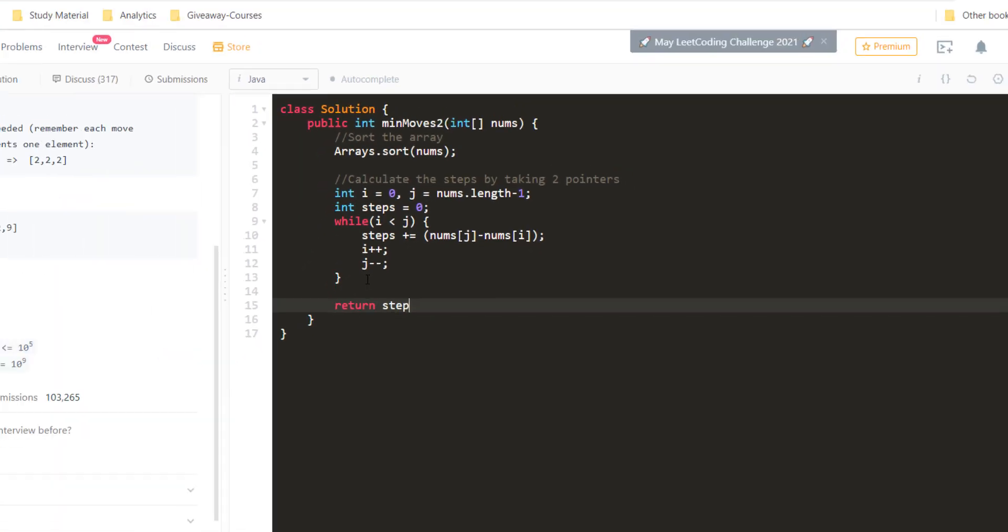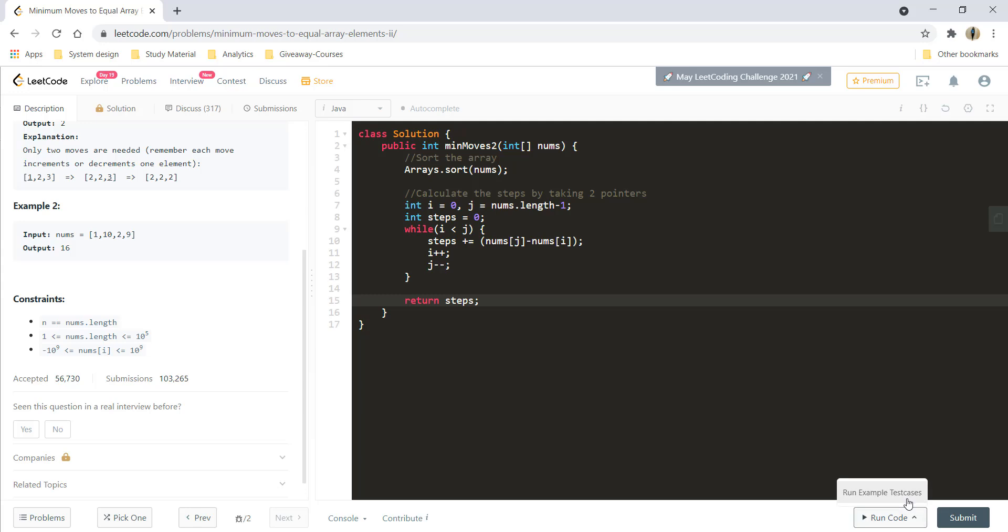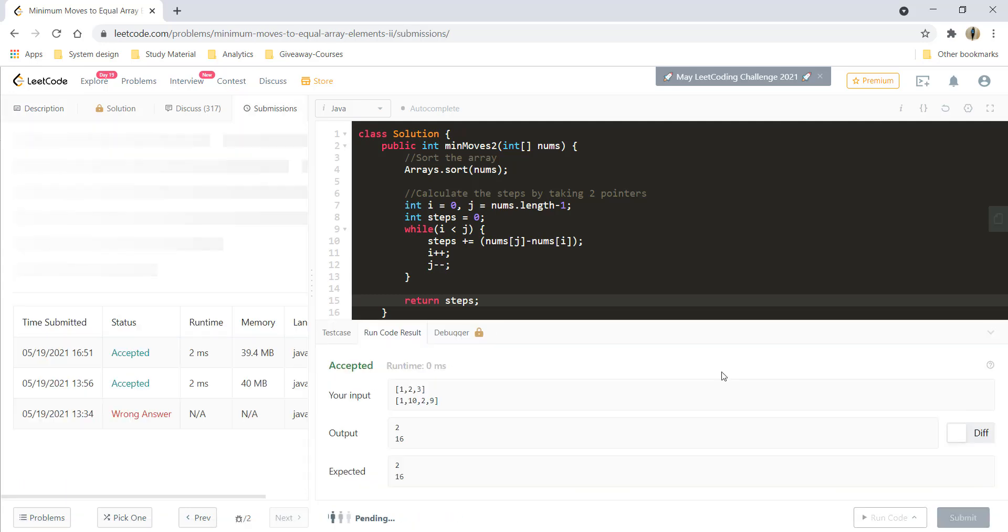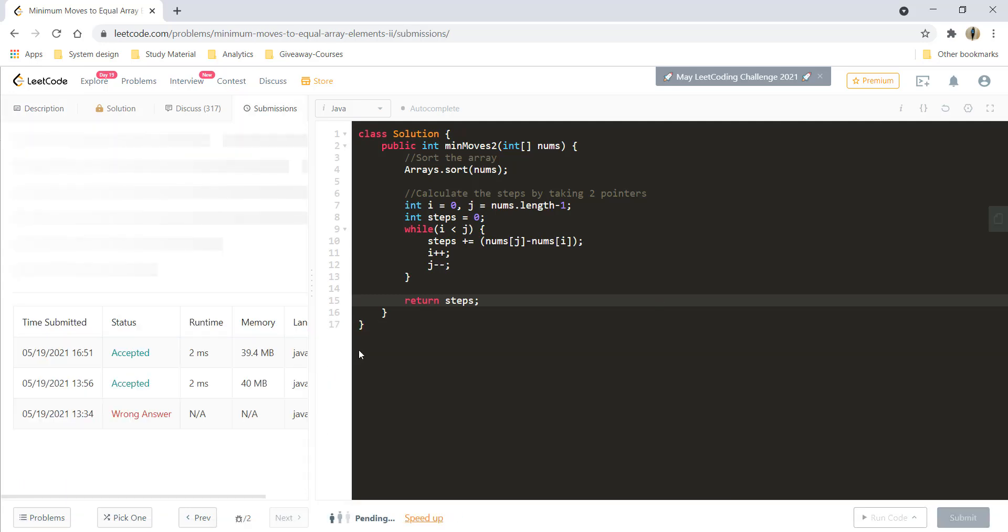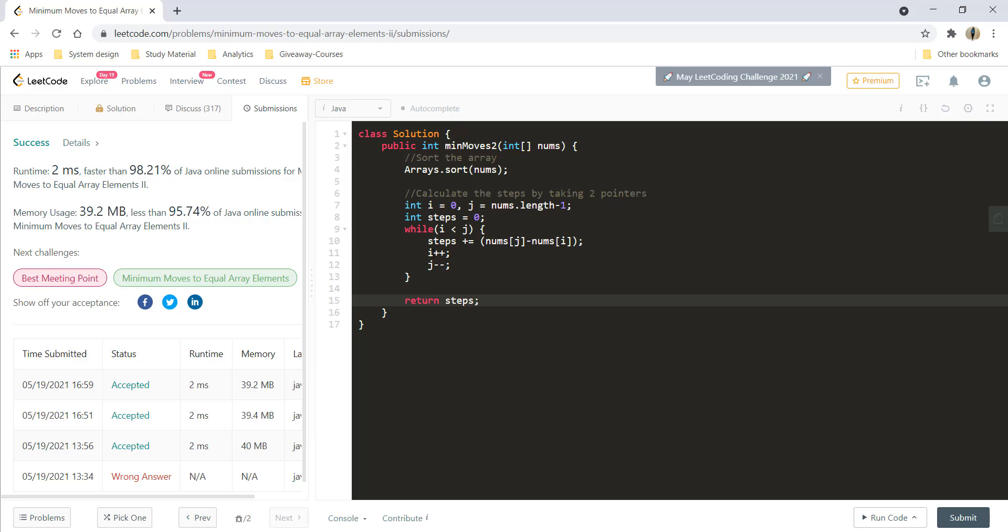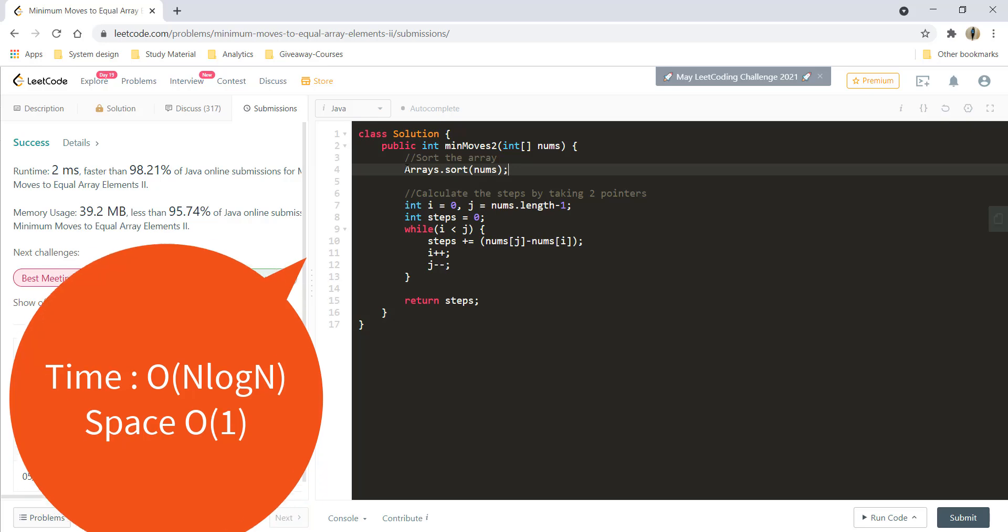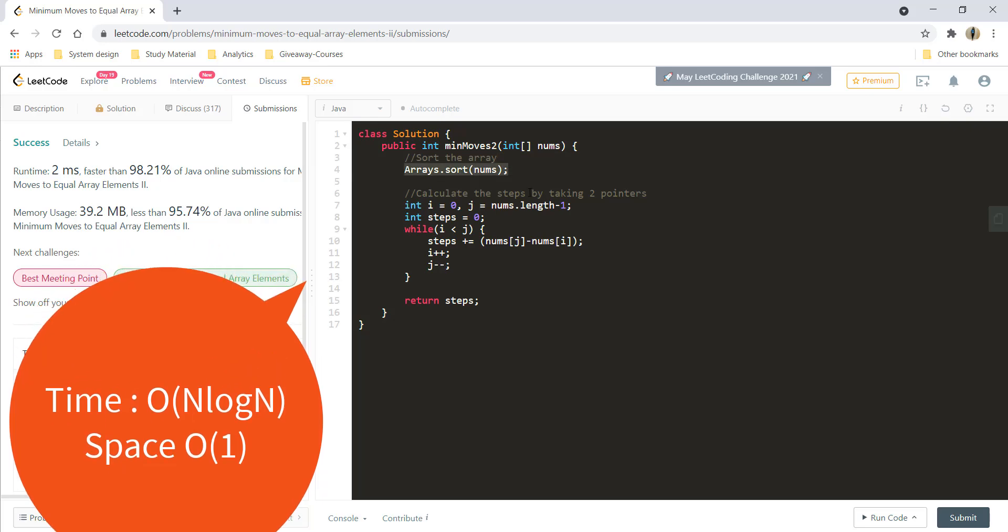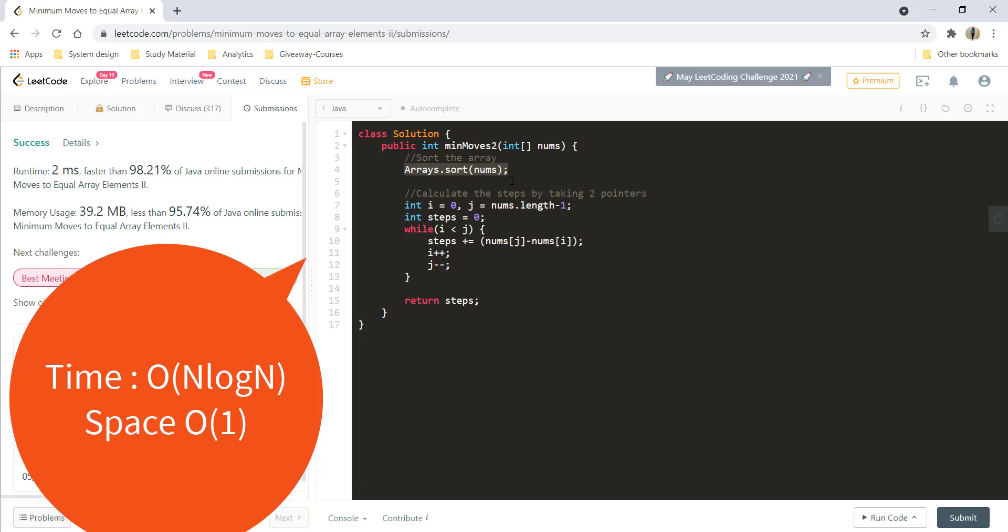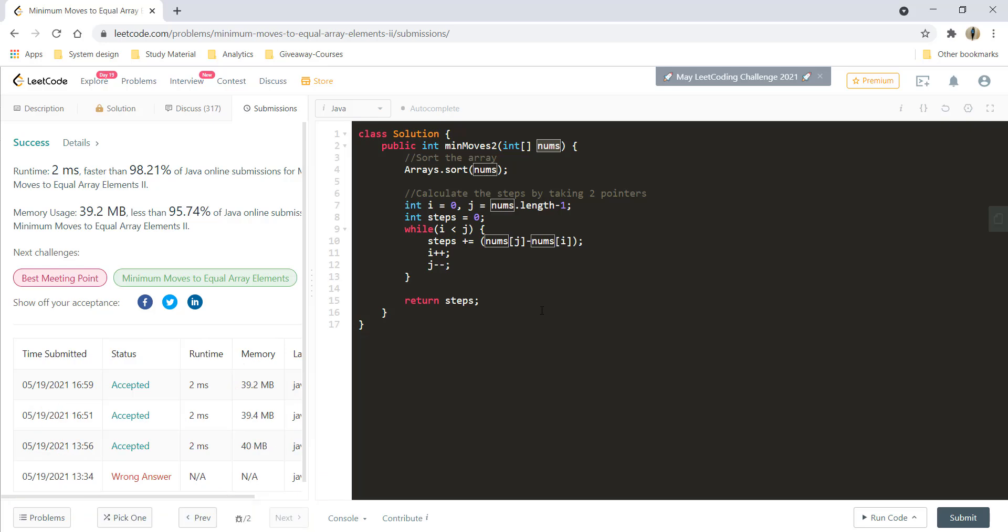Finally return the steps and that's it. Let's try to run this and it's giving a perfect result. Let's submit that and it got submitted. The time complexity over here still remains o of n log n because we are using a sort function and the space complexity is also o of 1 because we are not using anything other than the nums array itself.